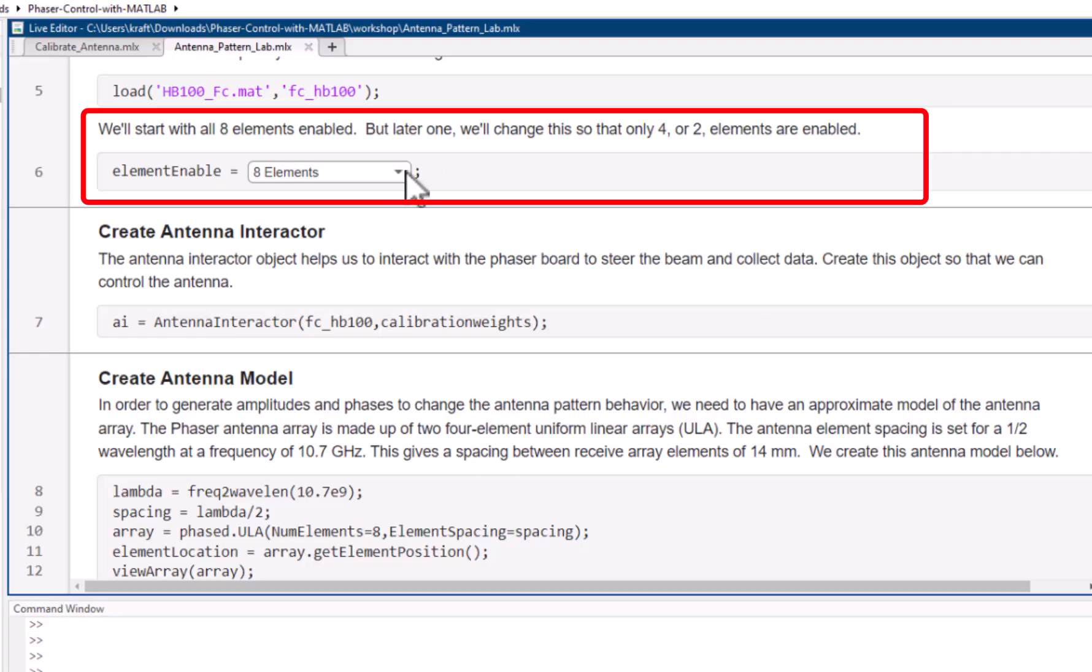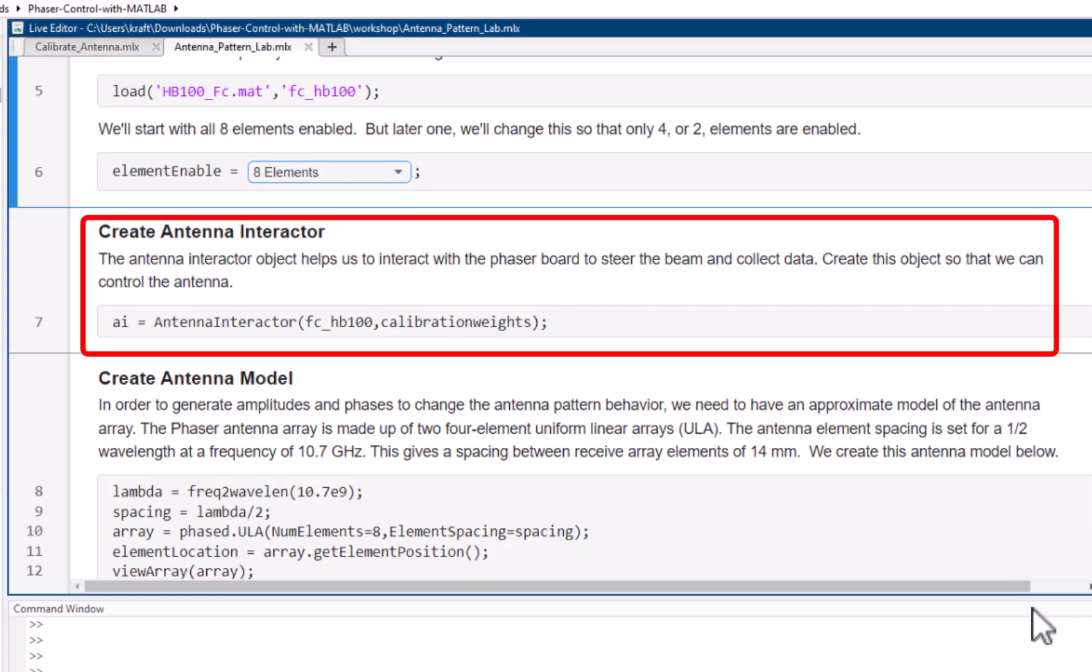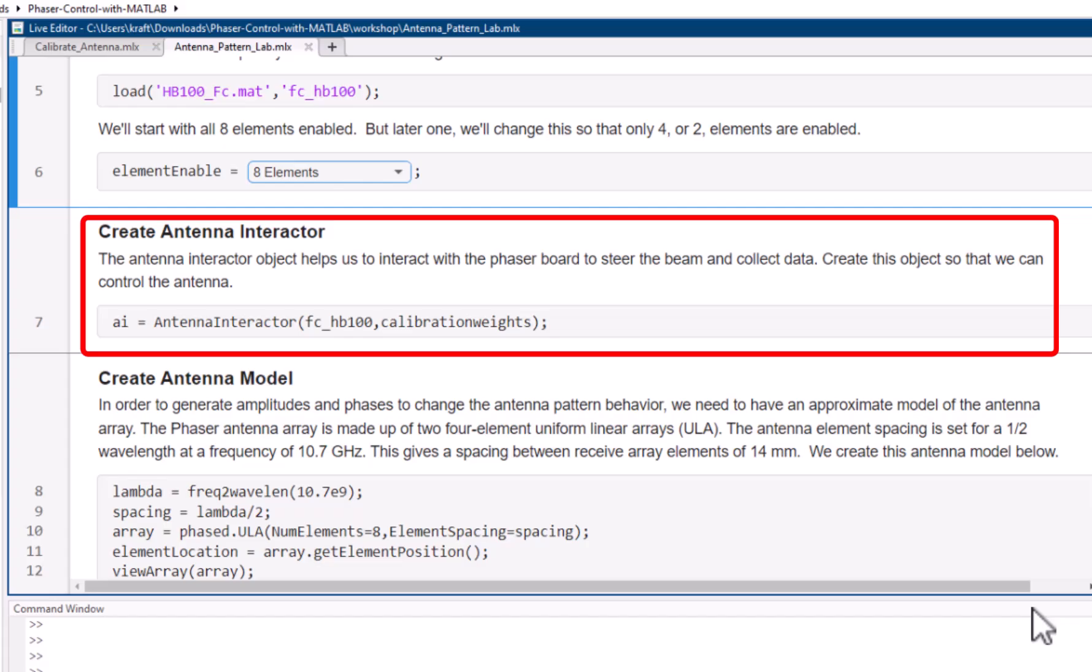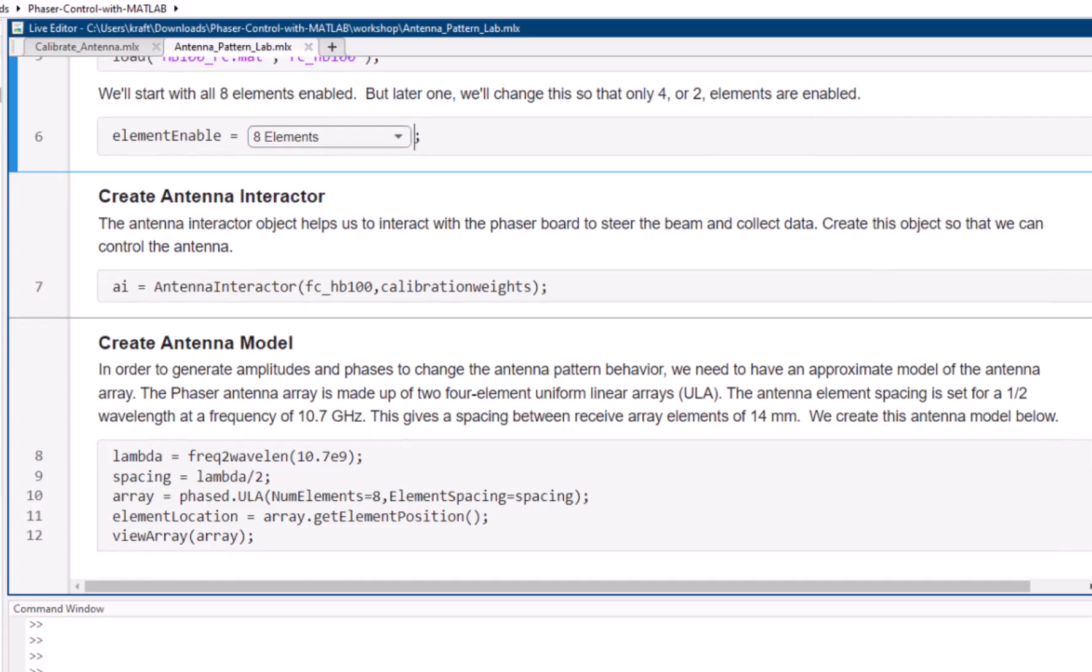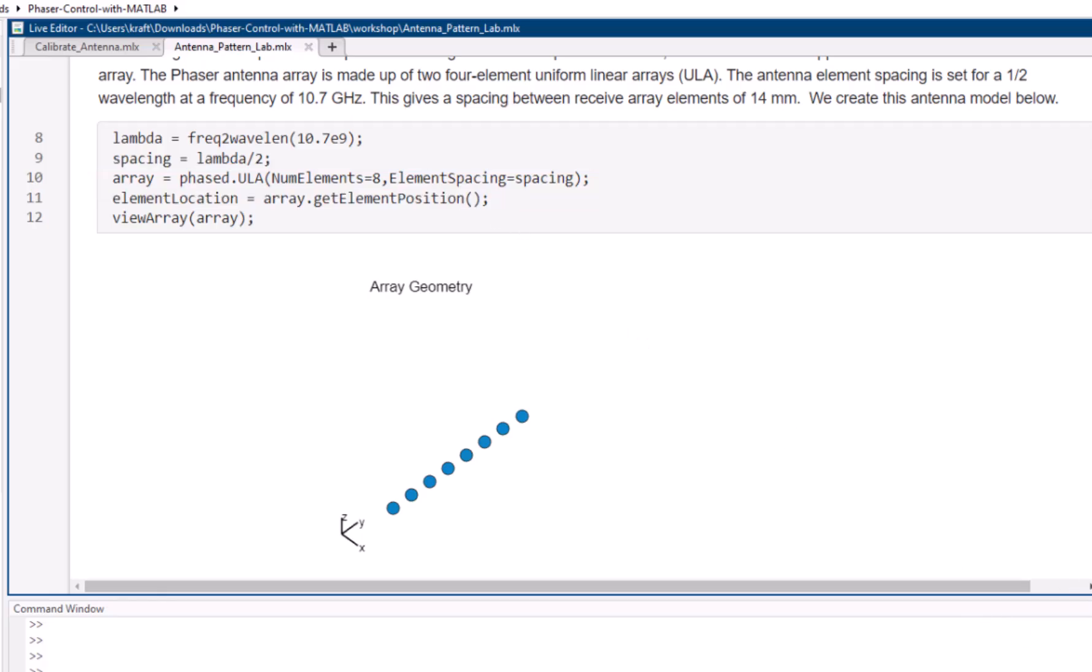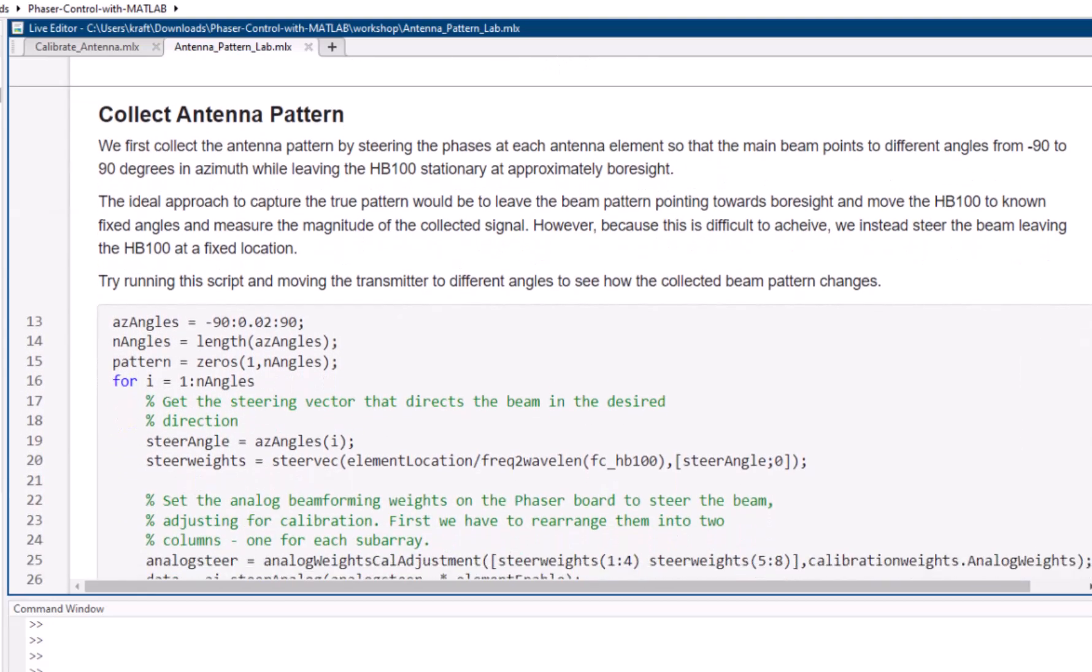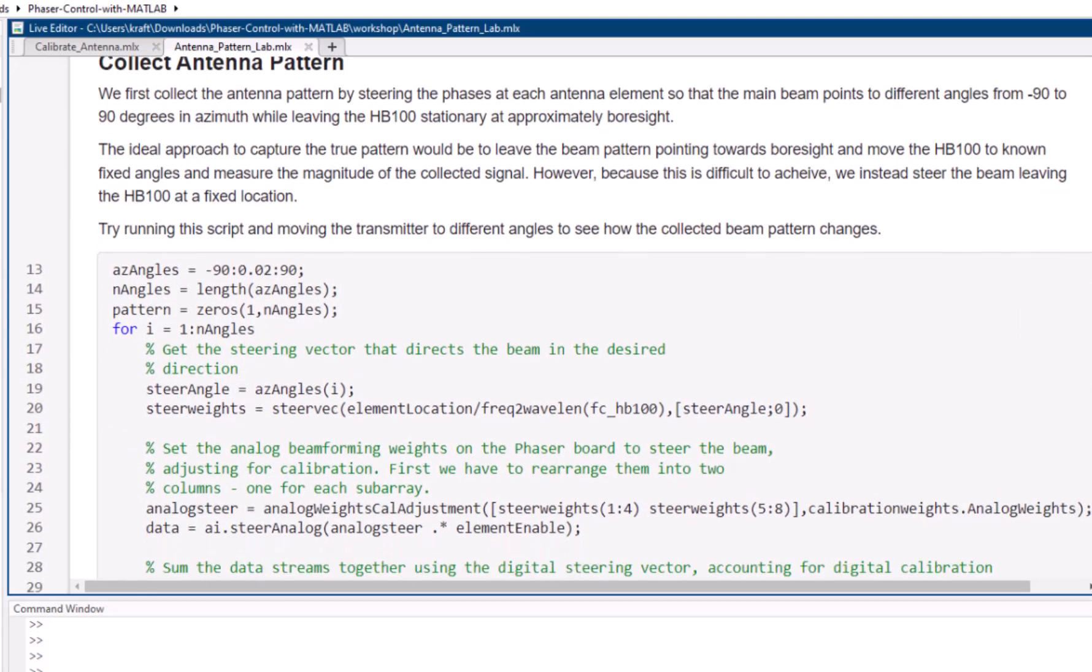And that live script will first load those calibration offsets from the calibration script. And then you can choose how many elements you want to enable in the array. The default is eight, but you could select four or two. And then George handles all the phaser object interaction in this Antenna Interactor function. You can dig more into that if you want. The Antenna model is created using the phased array toolbox, and you can see that it's just a simple 8-element linear array.